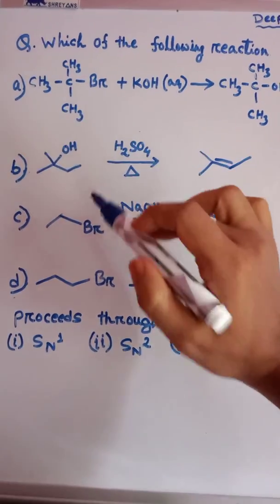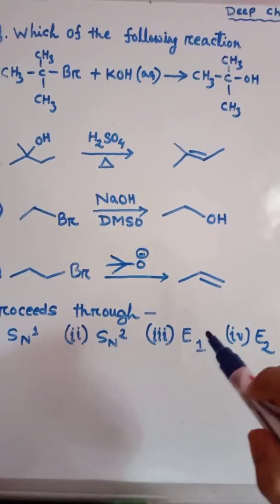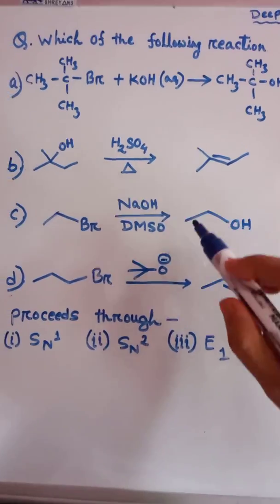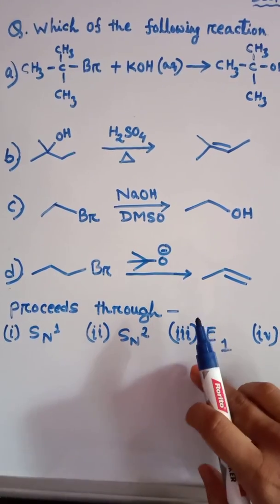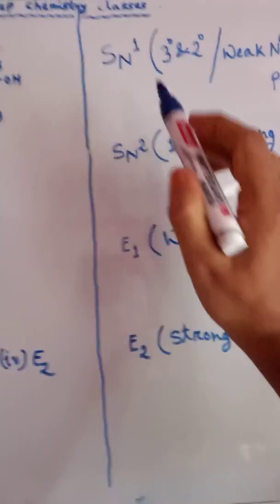Which of the following reactions proceeds through SN1, SN2, E1, and E2? Among these four reactions, we have to determine which one is nucleophilic substitution and which one is elimination.